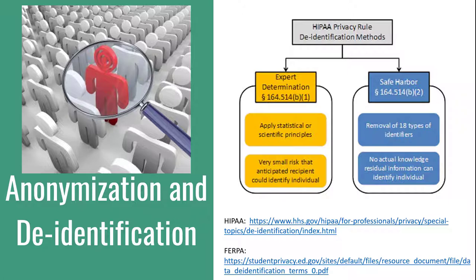Washington State recently considered, but didn't pass, a sweeping data privacy law that would have included non-profits. Where privacy statutes are likely to have their greatest impact on TDM, however, is indirectly — by regulating the activities of public and commercial data sources in ways that may reduce or complicate the availability of data for research.